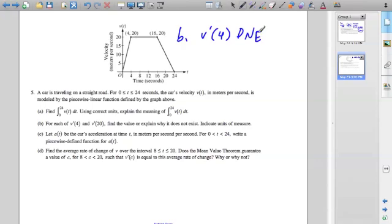And to put that in math terms and prove that, we could say that the limit as x approaches 4 from the positive side of v prime of t must equal the limit as x approaches 4 from the negative side of v prime of t in order for this instantaneous rate of change to exist.